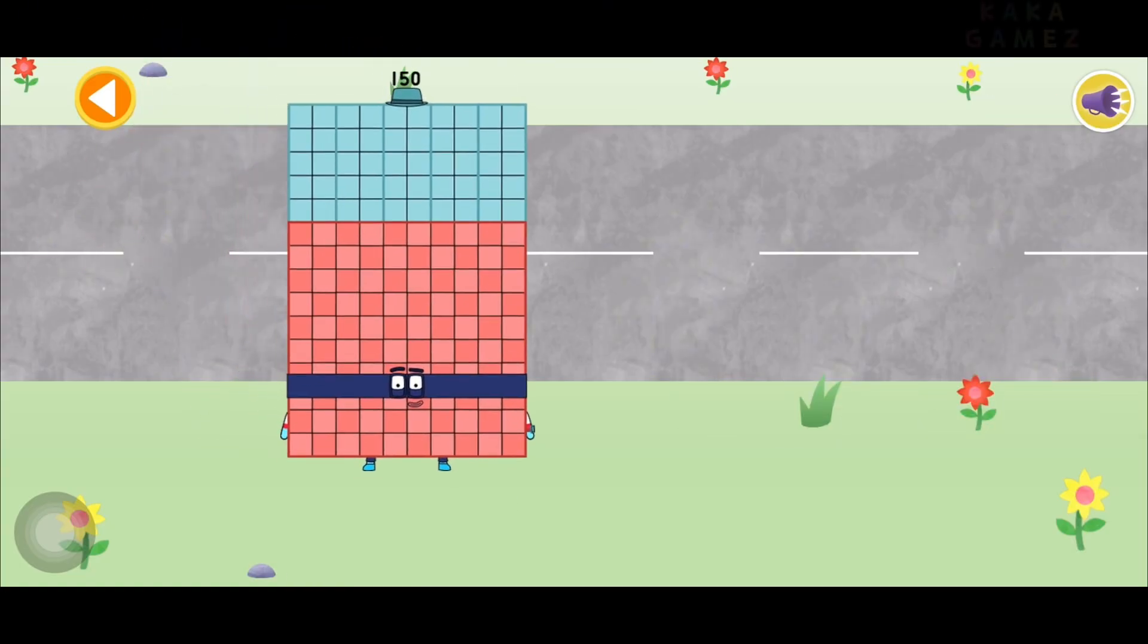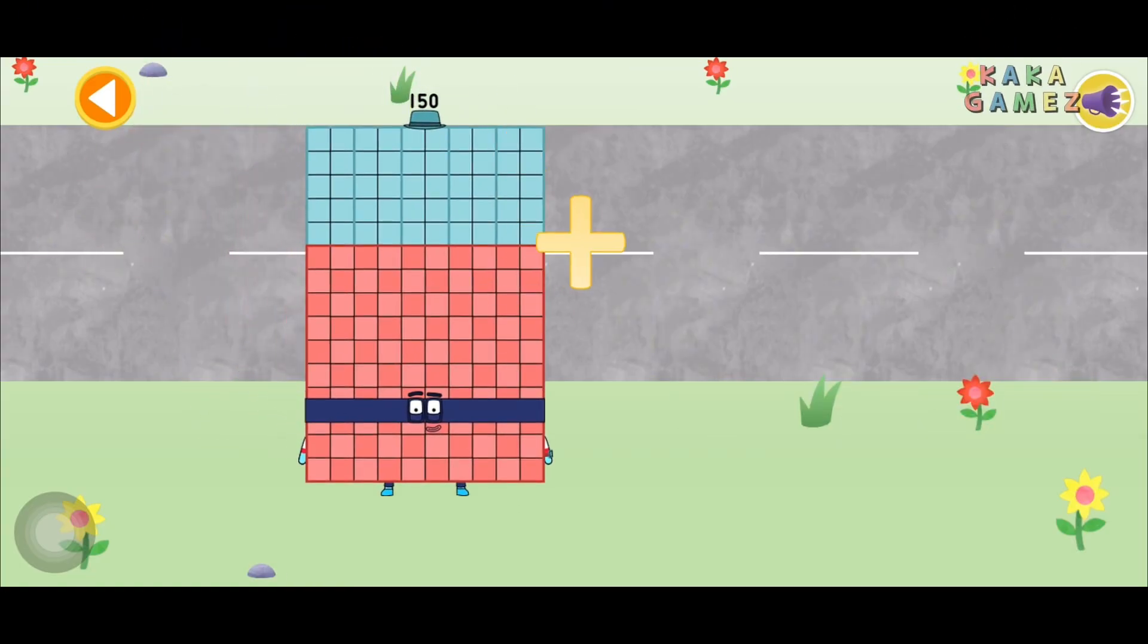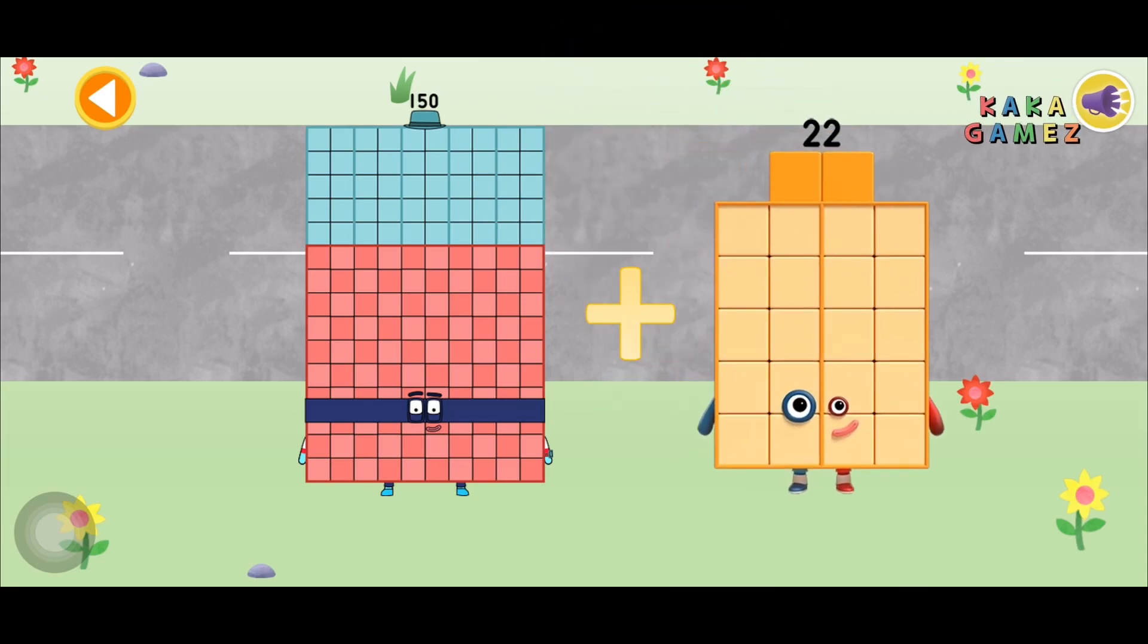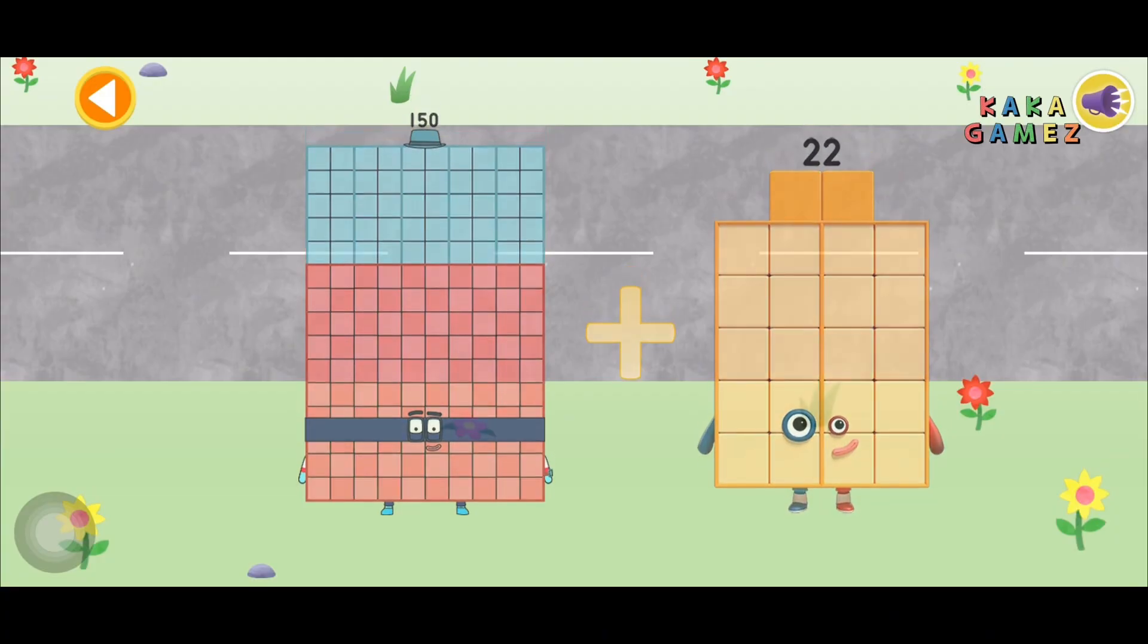If you have number blocks 150 and add number blocks 22, what will you get? Yes, you get number blocks 172.